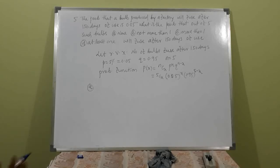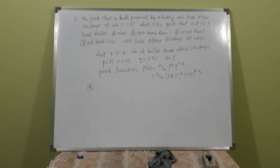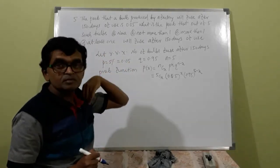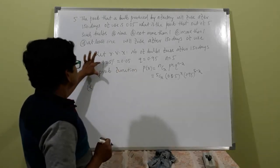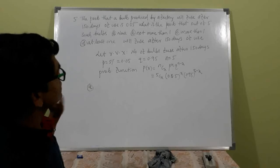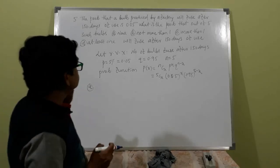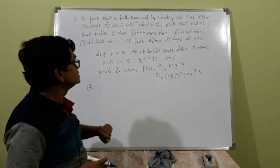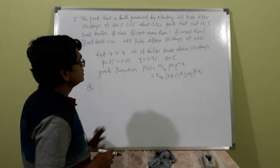Example: The probability that a bulb produced by a factory will fuse after 150 days of use is 5 percent. What is the probability that out of 5 such bulbs: (a) none, (b) not more than one, (c) more than one, (d) at least one will fuse after 150 days? This is a binomial experiment. Let X be the number of bulbs that fuse after 150 days. p = 0.05, q = 0.95, n = 5.